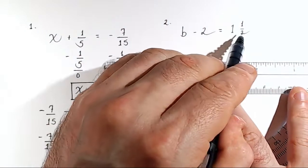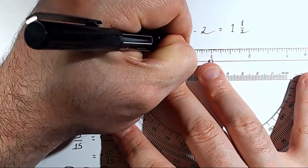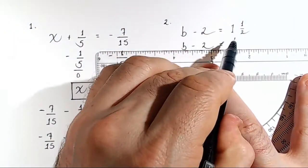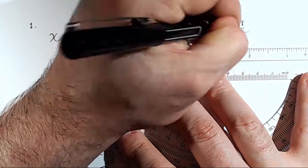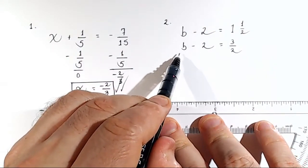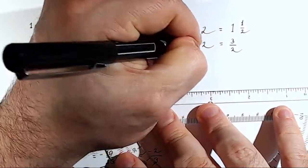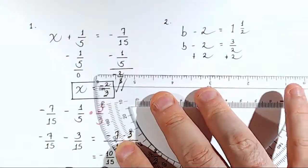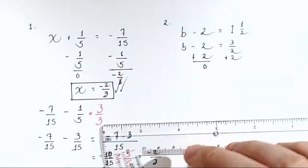So, the first thing we're going to do is convert 1 and 1 half into an improper fraction. So we'll just rewrite b minus 2 equals, and now we'll rewrite 1 and 1 half as 2 times 1 plus 1 over 2. So that's 3 over 2. Remember, we want to get the variable by itself. The variable is b. Right now, 2 is being subtracted from b. So we add 2 to both sides.